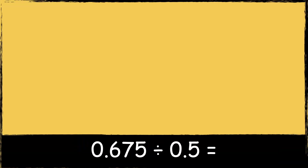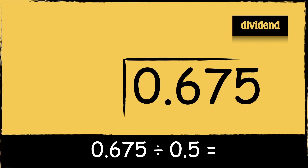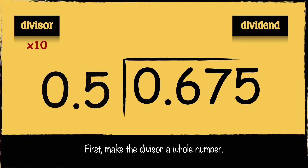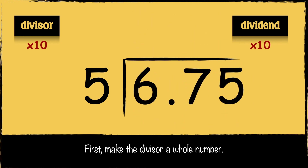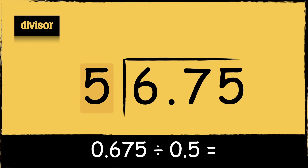Let's have a look at another example: 0.675 divided by 0.5. First we need to draw the bus stop. We put the number that we're dividing — the dividend — inside the bus stop, and we put the number that we're dividing it by — the divisor — next to the bus stop. I'm going to multiply the divisor by 10 to make it a whole number. 0.5 times 10 is 5, so I also need to multiply the dividend by 10: 0.675 times 10 is 6.75. Now that my divisor is a whole number, my calculation will be easier.